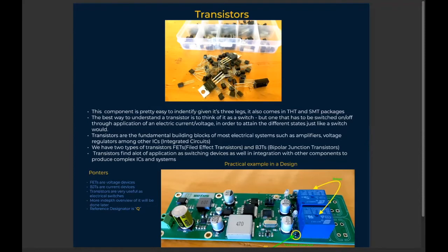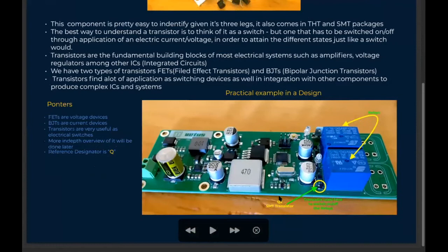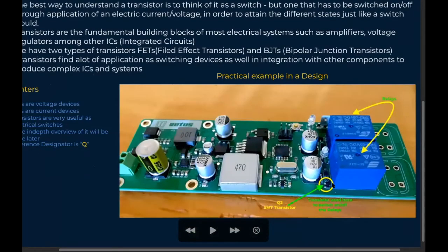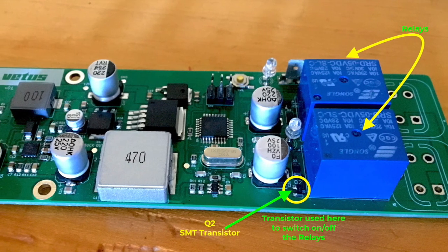Some few pointers here and actually one of the most useful: the reference designator on a PCB is Q. You always find it as Q. I've indicated here - well I've shown it practically like I've used it in one of my designs here. And this is an SMT transistor here, Q2 as you can see.